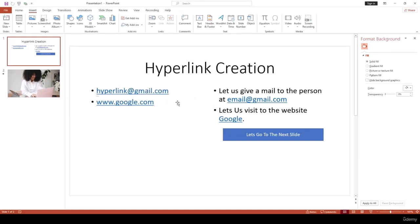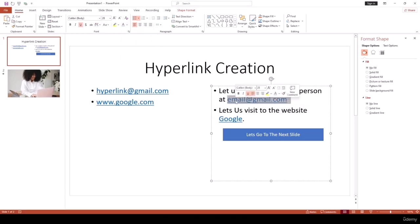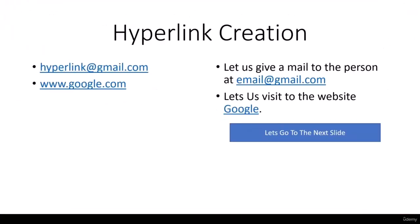If you want to remove the underline from a hyperlink, go to Home and try removing the underline formatting, but you'll notice nothing happens because the hyperlink has its own HTML format that overrides manual changes. Let's play the slide — clicking google.com takes you to google.com, and clicking the email address opens your mail application.